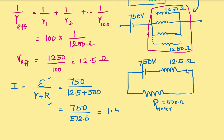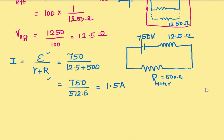And if you see, this 1.5 ampere current is distributed over 100 rows. So which will be 0.0015 ampere per row.